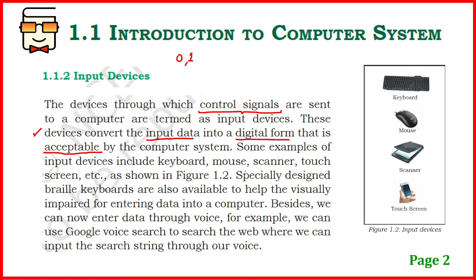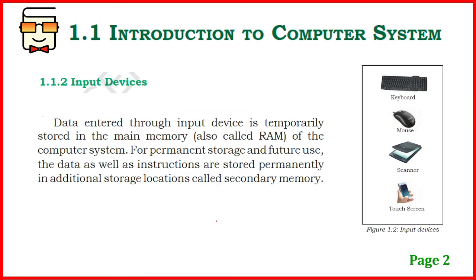Two important things to remember about input devices: they send control signals or instructions to the computer, and they convert input data into a digital form acceptable by the computer system. The main input devices you see in daily life include the keyboard, mouse, and scanner. You type using the keyboard, select using the mouse, and scan documents or photographs using a scanner. There are also touchscreens, touchpads, braille keyboards for visually impaired students, and voice commands are also a type of input.